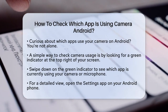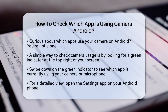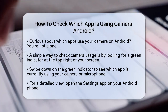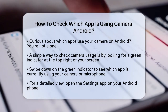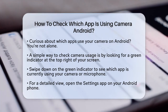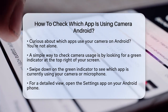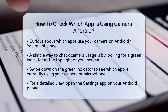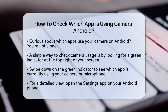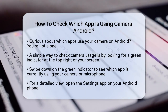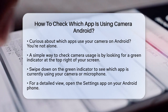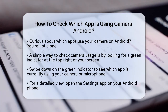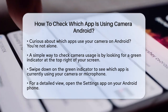First, let's start with the simplest way to check if an app is using your camera. When an app is accessing your camera or microphone, you'll see a green indicator at the top right corner of your screen. Swipe down and tap on this indicator to see which app or service is currently using your camera or microphone.